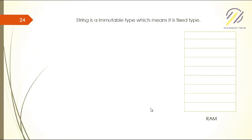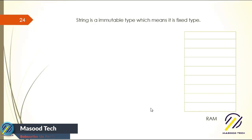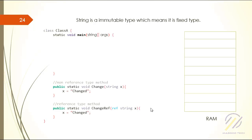String is an immutable type, meaning it's a fixed type. Whenever you create a string, it creates a new memory location — it never changes the previous string. If you first say 'hello world' and then change it to 'changed', it doesn't modify 'hello world' in place. Instead, it looks up the heap, assigns a new memory location for 'changed', and makes a new string. Every time you change a string, it makes a new one — that's why it's called immutable.